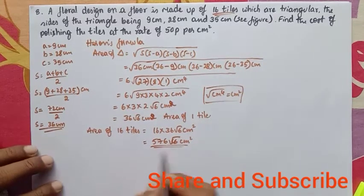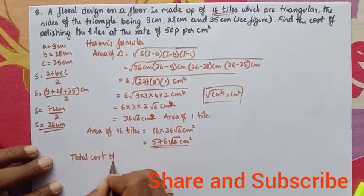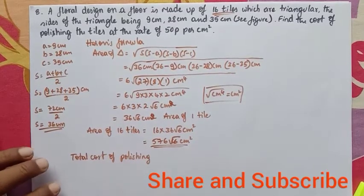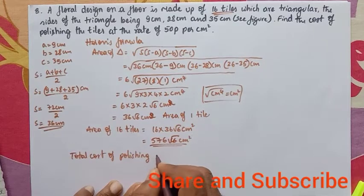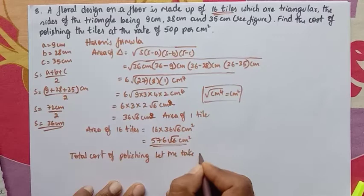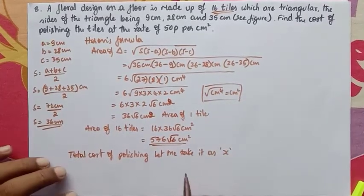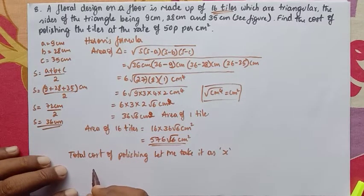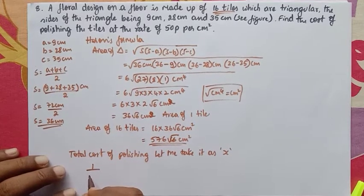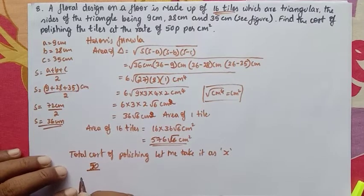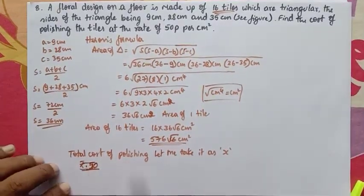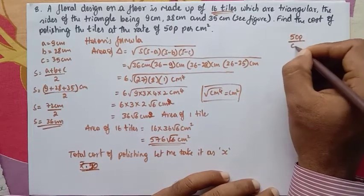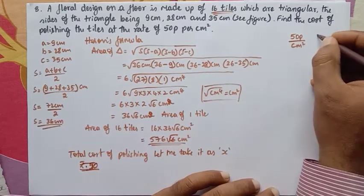Now for the total cost of polishing: the rate is 50 paise per centimeter square. 50 paise equals rupees 0.5. So for 1 cm² the charge is Rs 0.5.